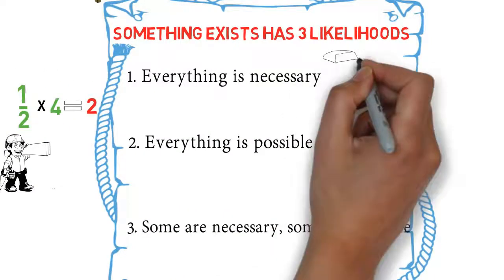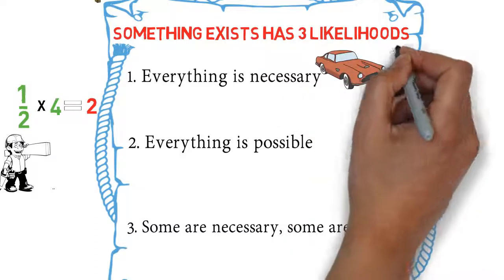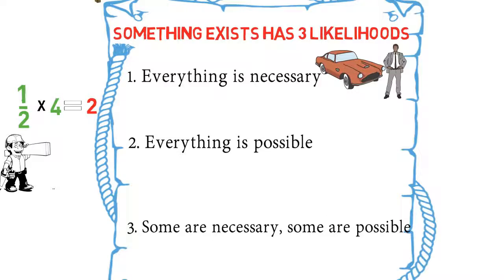Number one, everything that exists is necessary, is impossible. Why? This car or this human, are they necessary? Did they depend on anything else to be realized or come into being? Of course they did. The car depends on material or on engineers. The human depends on its mother and father to be realized. So this crosses out everything that exists is necessary.